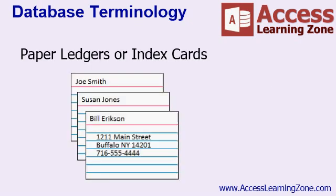In the days before computers, data would be stored on paper, usually in a ledger book or on index cards. For example, to keep track of your customers, you'd make a series of index cards with one customer per card. You'd have a separate drawer of cards for the products that you sold or the suppliers that you did business with. However, as efficient as this may have seemed at the time, it was very time consuming to sort through the cards or to search through a large drawer of cards for some particular bit of information.